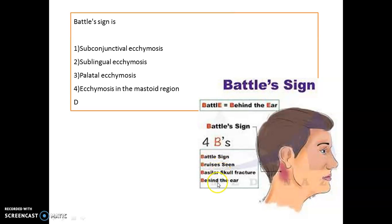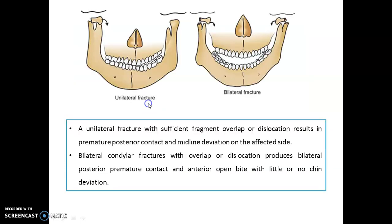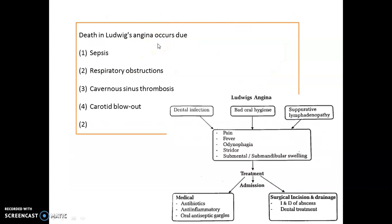Anterior open bite is associated with bilateral condylar fracture. In unilateral condylar fracture, you see midline shift toward the fracture site and premature posterior contact. In bilateral condylar fracture, you see anterior open bite and premature posterior contact, but no chin deviation. Ludwig's angina occurs due to respiratory obstruction secondary to dental infection, bad angina, or sometimes lymphadenopathy.